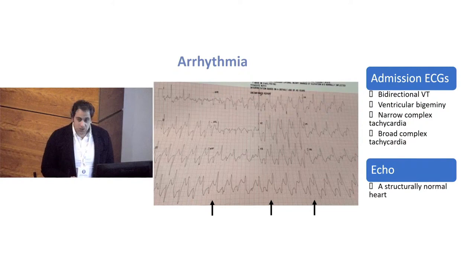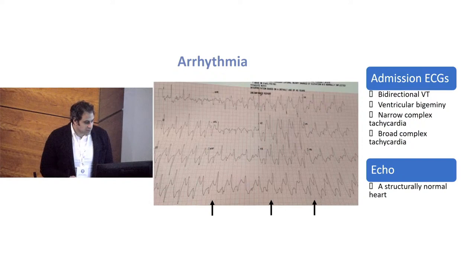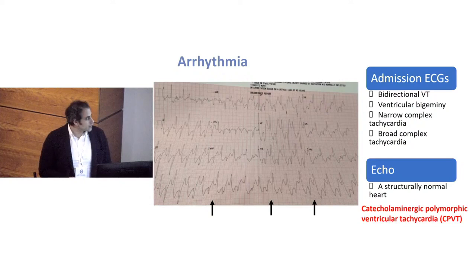She was subsequently extubated, haemodynamically stable, stepped down at day 6 from PICU to a paediatric cardiology ward. She had a subcutaneous ICD inserted, beta blockers switched to oral nadolol, and had good compliance. Her echo when she was in sinus rhythm was normal, showing a structurally normal heart — so we were seeing multiple arrhythmias and polymorphic ventricular tachycardia on the background of a structurally normal heart. The working diagnosis was CPVT.